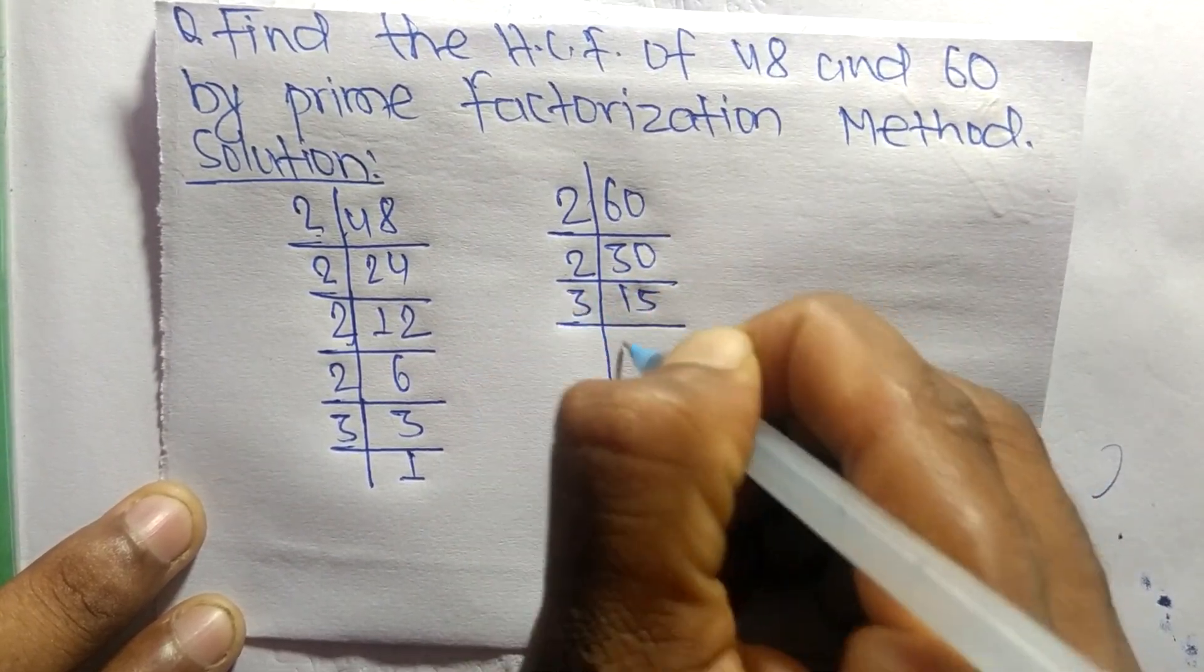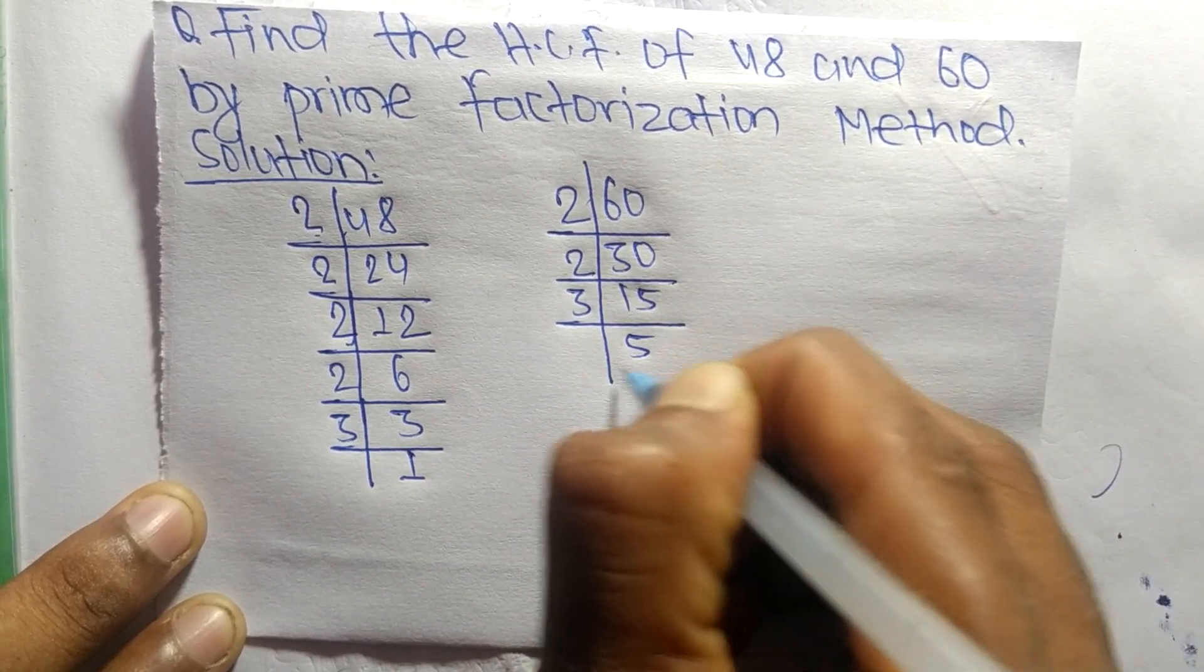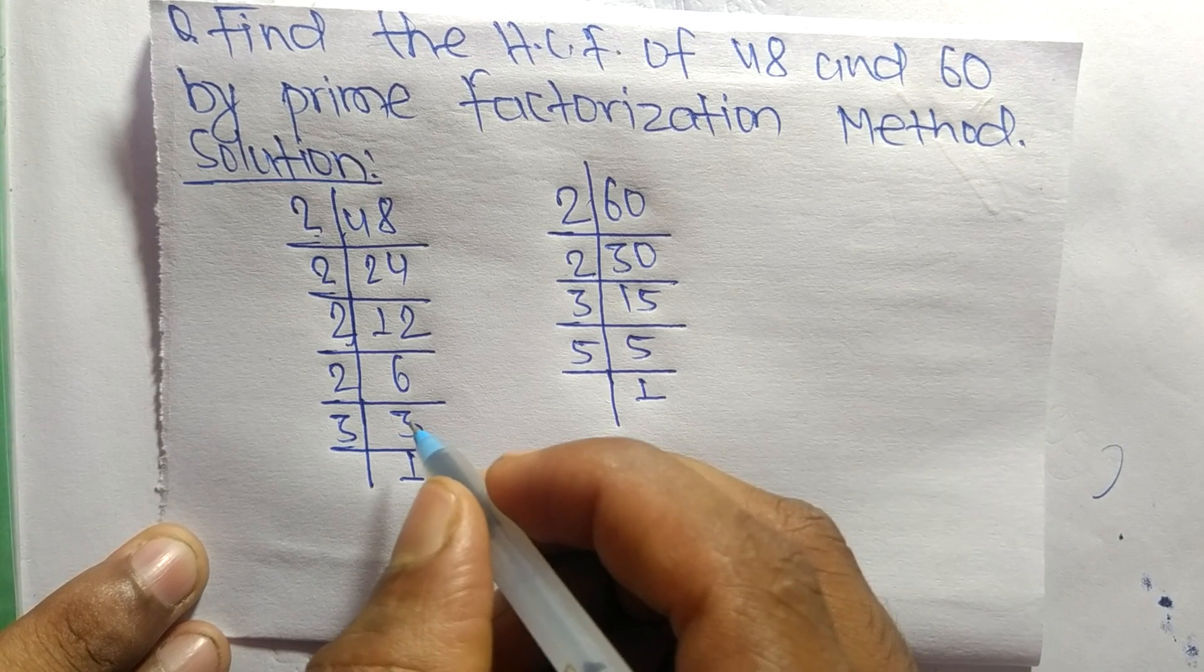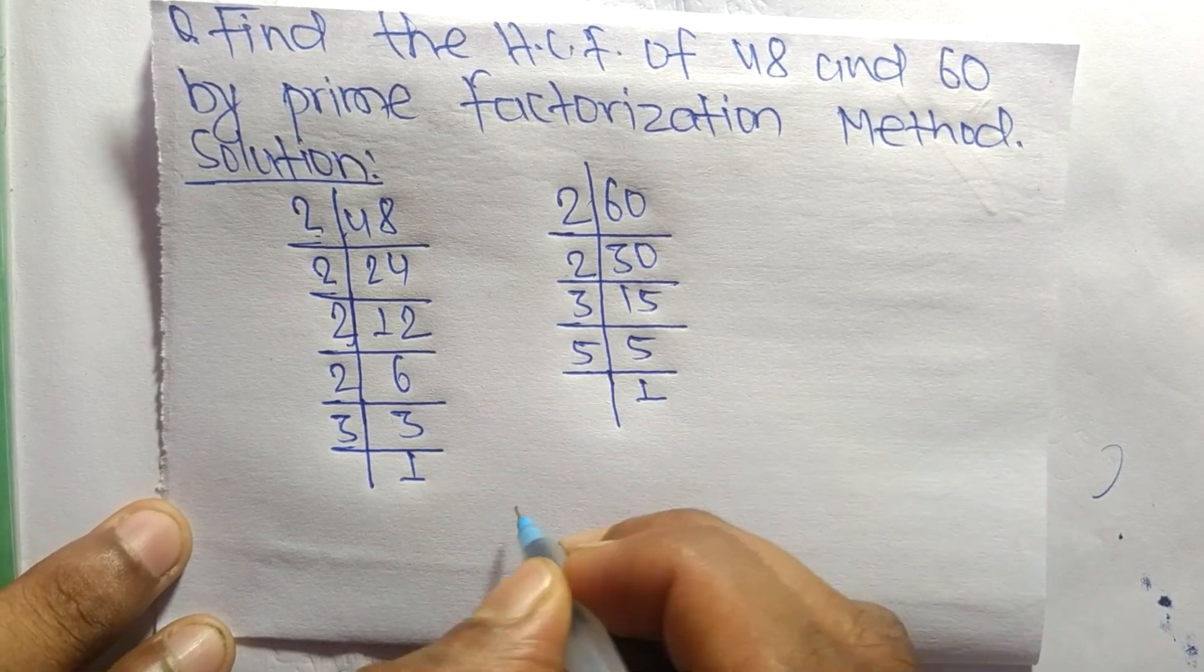3 times 5 equals 15, and 5 times 1 equals 5. So now from these prime factors, we can...